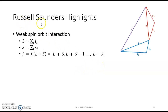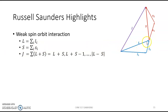In the last video we talked about Russell-Saunders coupling, which assumes a weak coupling between the spin motion of the electron and the orbital motion of the electron. Each orbital motion couples together to form a resultant L, and each spin motion couples together to form a resultant S, so L equals the summation of all lᵢ's and S equals the summation of all sᵢ's. Then the resultant orbital angular momentum couples with the resultant spin to give the total angular momentum J, which goes from L plus S to |L minus S|.